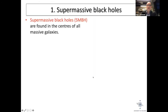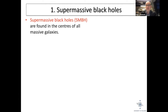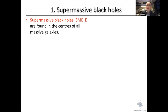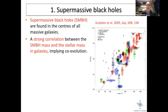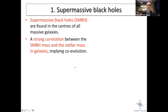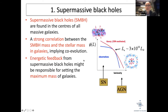First, some motivation. Supermassive black holes are found in the centers of all massive galaxies. We know there's a very strong correlation between the mass of the supermassive black hole and the stellar mass in the galaxy — here the velocity dispersion is plotted — which implies some kind of co-evolution. In addition, we think that energetic feedback from supermassive black holes might be responsible for setting the maximum mass of galaxies.